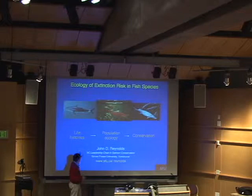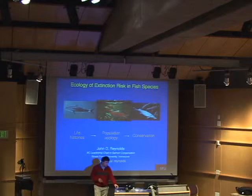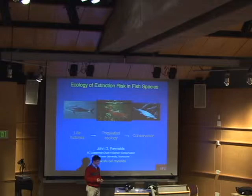Aspects of animals, such as when they mature, how large they are, how many eggs they produce, and so on, and how those then affect population ecology, and then in turn, how that information can be used to inform what we know about conservation.